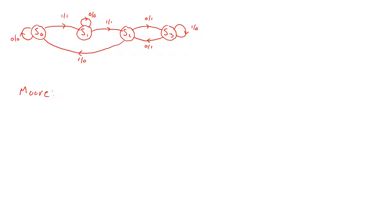To convert to a Moore graph, we need to look at the entering edges to each of the states. For state S0, the entering edges both output a zero, so we don't have to do anything for S0. For state S1, one entering edge outputs a one and one outputs a zero, so we need to split S1 into two different states.